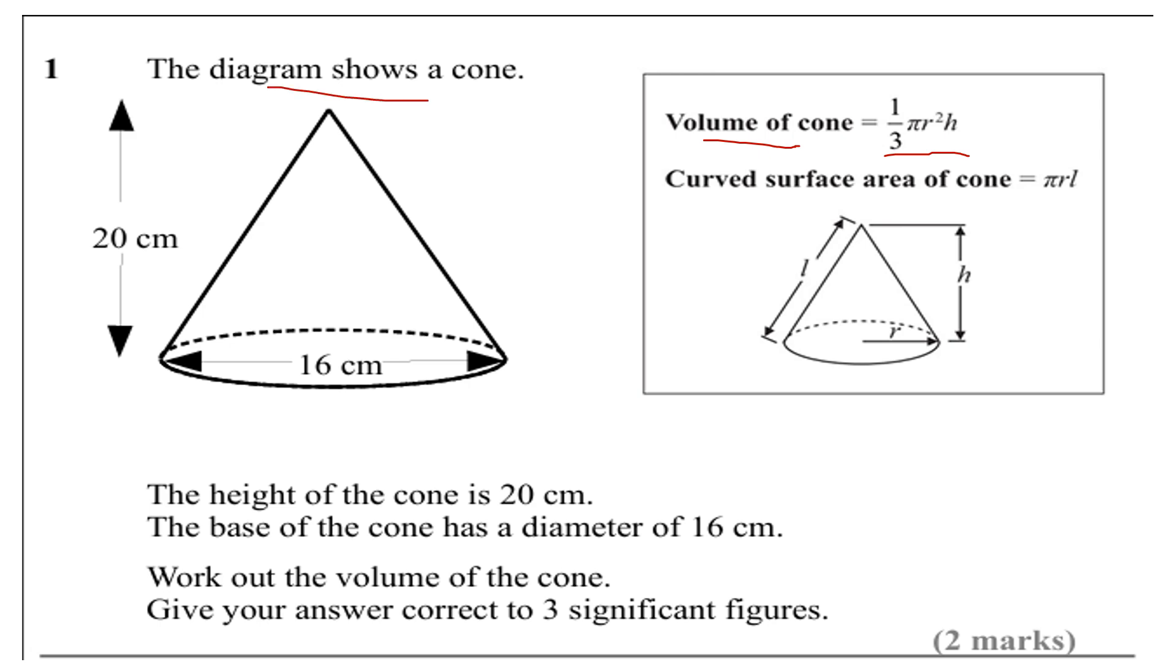Question number one. The diagram shows a cone. The height of the cone is 20 centimeters. The base of the cone has a diameter of 16 centimeters. Work out the volume of the cone. Give your answer correct to three significant figures.